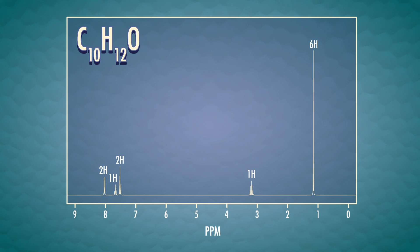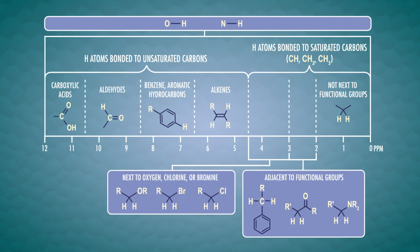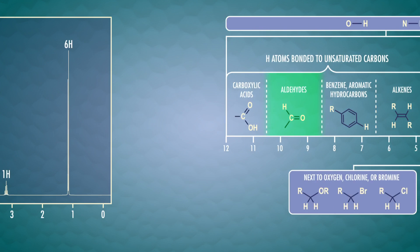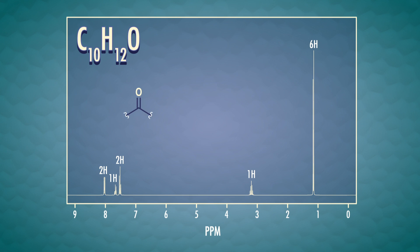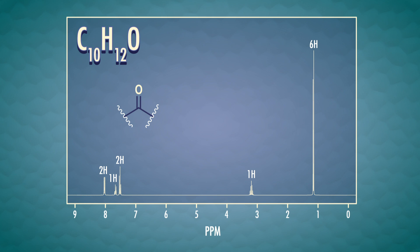Now let's try to figure out an aromatic compound based on a proton NMR spectrum. We know its formula is C10H12O, and we have an IR spectrum with a carbonyl stretch, so we know it's an aldehyde or ketone. By looking at our NMR table, we know that an aldehyde proton would appear between 9 and 10 ppm. There's no peak there, so it looks like our mystery compound is a ketone. Next, let's look at the huge peak on the right with an integral of 6.